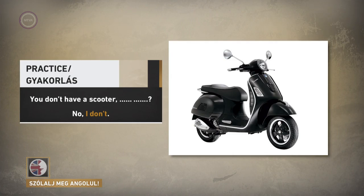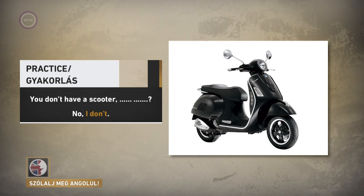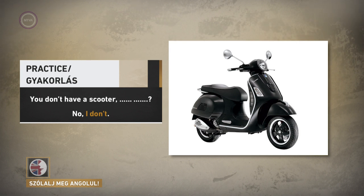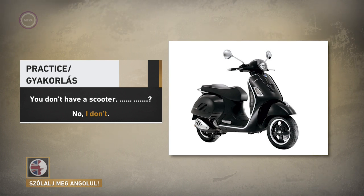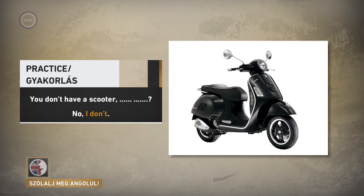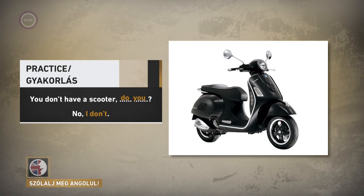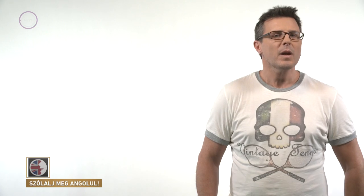OK, so let's try a few of those to practice. You don't have a scooter. No, I don't. What's the correct question tag? Is the sentence positive or negative? The sentence is negative, so that means the question tag has to be positive. And the sentence is in the present simple, which means that the question tag uses the verb 'do'. So the correct question tag is 'do you?' — You don't have a scooter, do you? No, I don't.